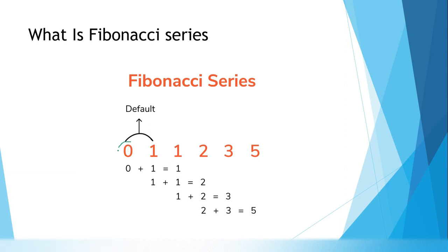We have zero and one as default. In the first iteration, what I will do: zero plus one — I am just adding these two numbers — and I am getting a third number as one. One is my first Fibonacci series number. After that, my second number will become the first number for the second iteration, and my result will become the second number for the second iteration.